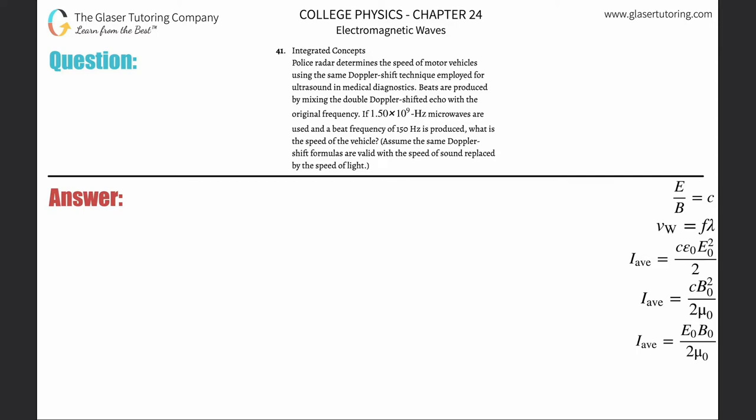Number 41, integrated concepts. If 1.5 times 10 to the 9th hertz microwaves are used and a beat frequency of 150 hertz is produced, what is the speed of the vehicle? So there's a Doppler effect problem.